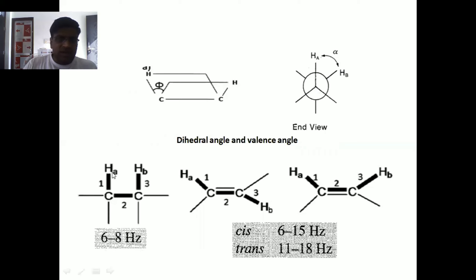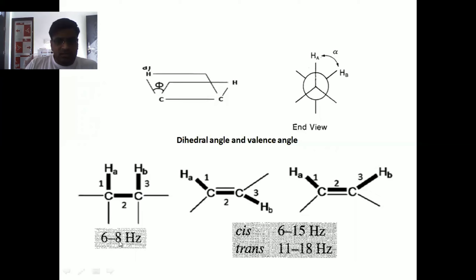HA and HB are vicinal protons, three bonds apart. As discussed earlier, coupling cannot occur through space — HA cannot couple with HB through space, just like with chemical shift. The HB protons couple with HA protons through the bond electrons. These two protons are one, two, and three bonds apart, so this is called vicinal coupling, and the value of vicinal coupling is 6 to 8 Hz when carbon and carbon are attached by a single bond.